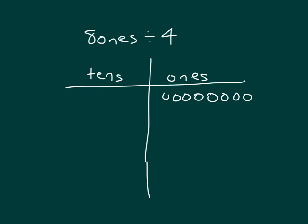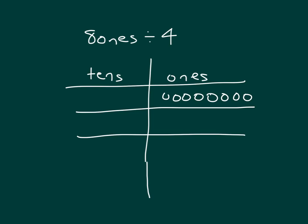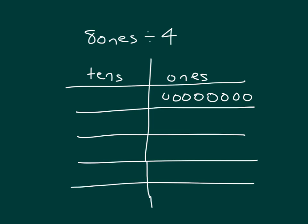We have eight ones there. What are we dividing by? Right, we're dividing by four. Let's assume it's telling us how many groups to make. So we're going to go ahead and draw four groups below inside our place value chart — one group, two groups, three groups, and four groups.